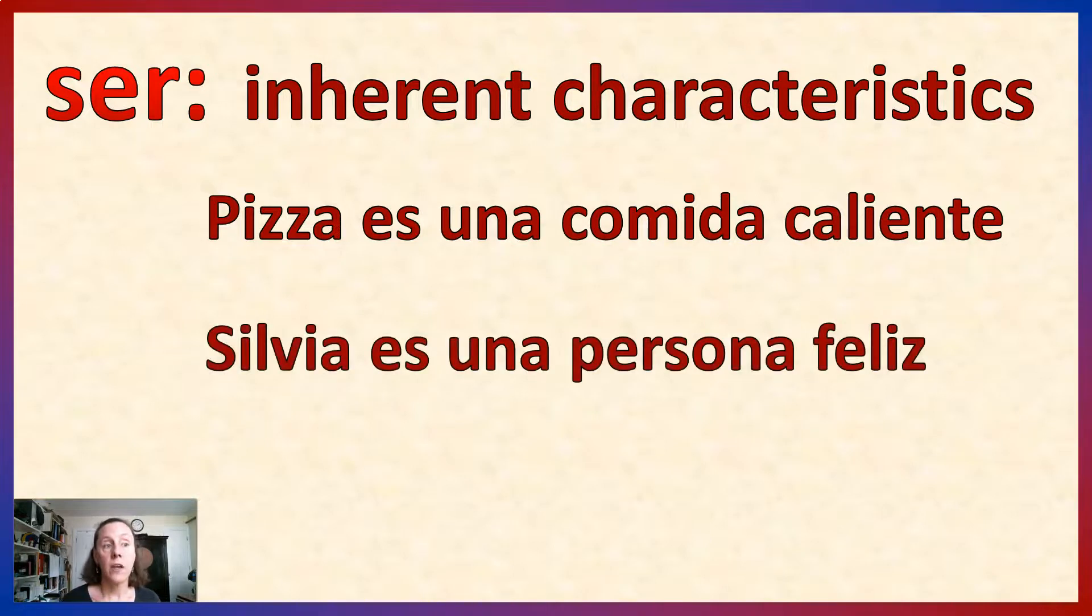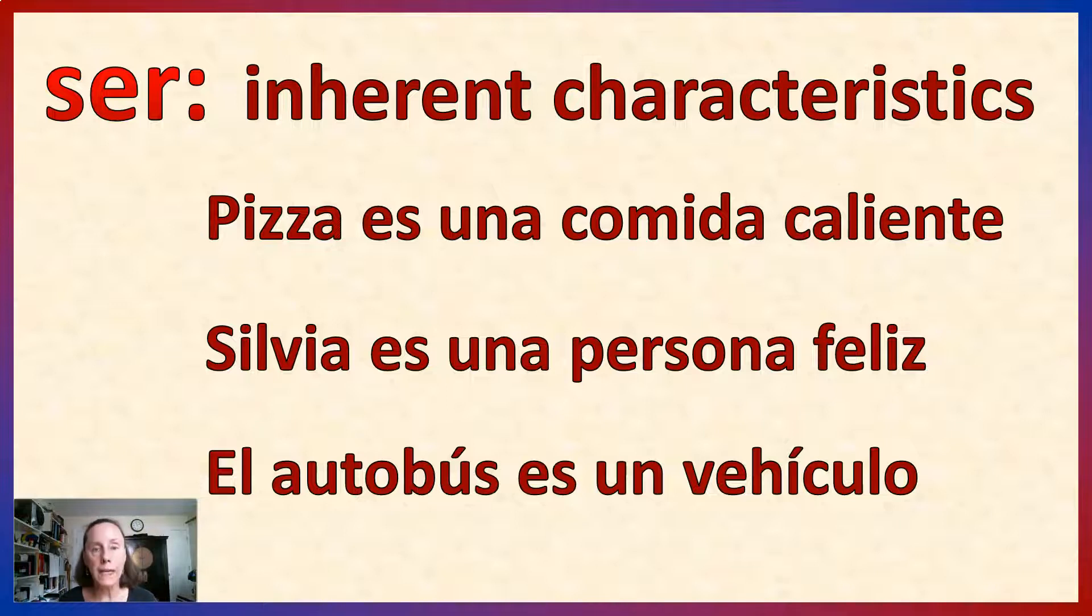Or, inherent characteristics. Silvia es una persona feliz. I'm not saying that Silvia is happy today. I'm saying that in general, her personality is happy and cheerful. Silvia es. Next one. El autobús es un vehículo. The bus is a vehicle. Again, you can see very clearly that I could use the equal sign there. El autobús equals vehículo.